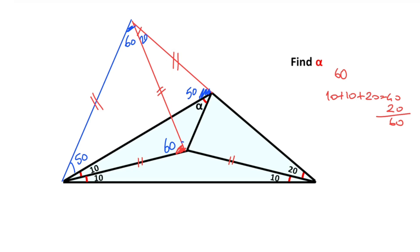Since the vertex angle equals 20 degrees, the base angles must each equal 80 degrees. Therefore, 50 plus alpha equals 80 degrees, so alpha is going to be 30 degrees.